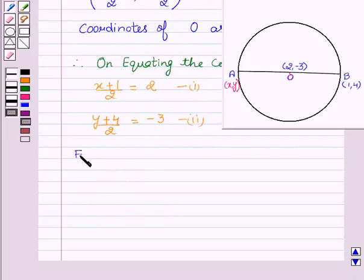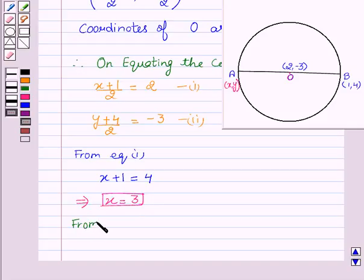Now from equation first, we have X + 1 equal to 4. This implies X equal to 3.